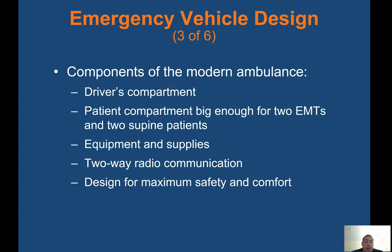Components of the modern ambulance include the driver's compartment and patient compartment, which is big enough for two EMTs and two supine patients. You have area in the middle for the gurney and a seat or bench next to you for a second patient. There's a wall between the patient compartment and the driver's compartment. You'll also have equipment, supplies, and two-way radio communication to talk with your own dispatch and fire dispatch.